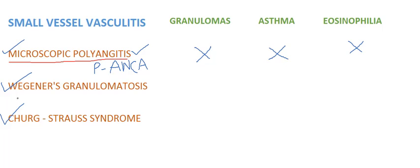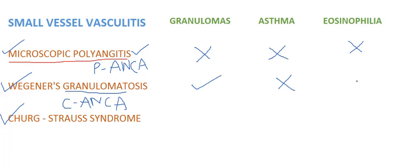In Wegener's granulomatosis, this is associated with C-ANCA — in almost up to 90% of patients with Wegener's granulomatosis. As the name suggests, granulomatosis, granulomas are present, but there will be no asthma and no eosinophilia.